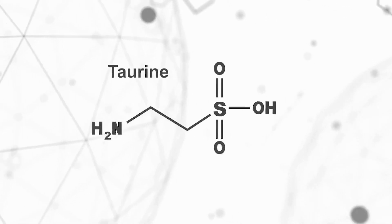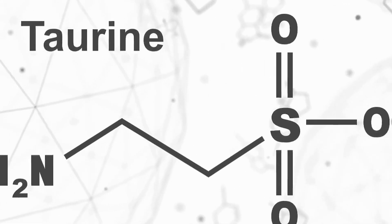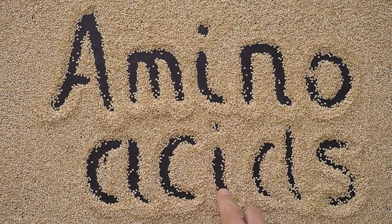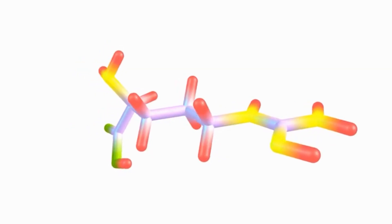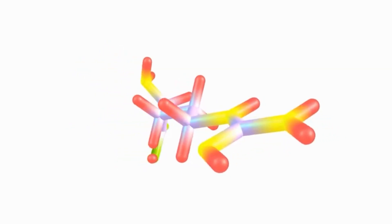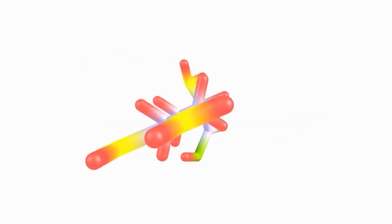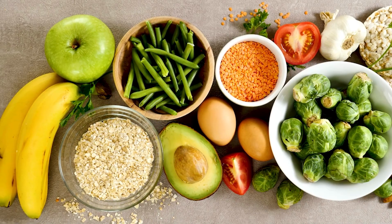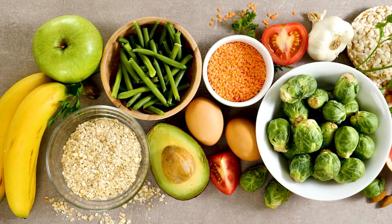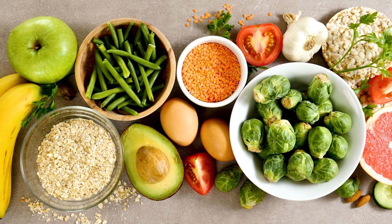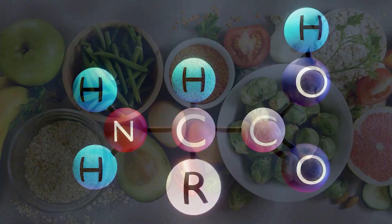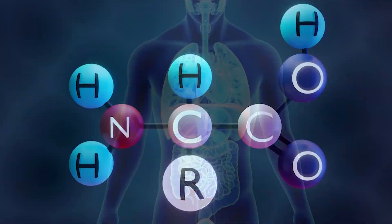So taurine is an amino acid — it's classified as a semi-essential amino acid, which means that we get it from food but we can also make it from some of our other amino acids in the body.